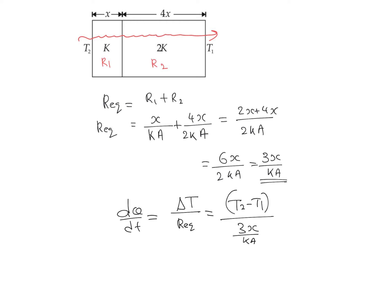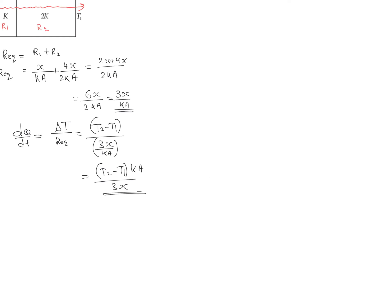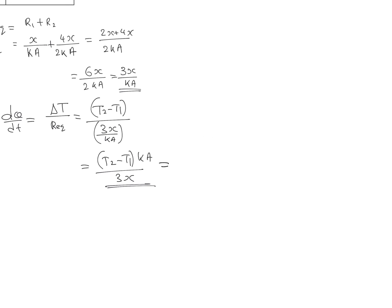KA. So this equals (T2-T1)/(3x/KA) = (T2-T1)KA/(3x). According to the question, this is given as (T2-T1)KA/x times f, and we need to find the value of f.